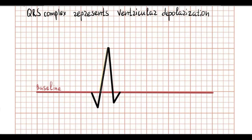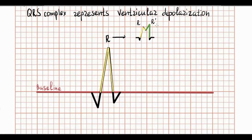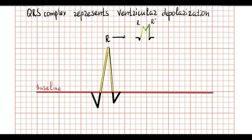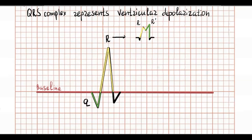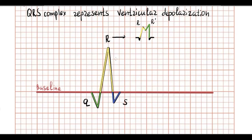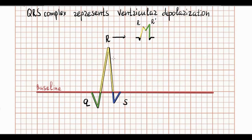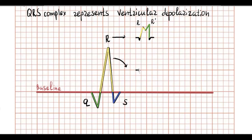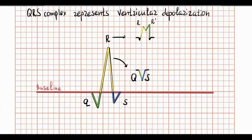The R wave is every positive wave in the QRS complex. If we find few positive waves, we call the first wave R and the second R'. The Q wave is a negative wave located before the R wave. The S wave is a negative wave after R. If there are no positive waves and the entire QRS complex is represented by a negative wave, it is called a QS complex.